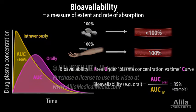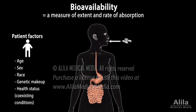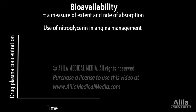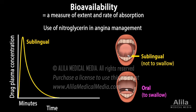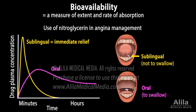Bioavailability of a defined drug form also depends on patient factors. For example, bioavailability of oral drugs is lower in people with digestive problems or previous gastrointestinal surgeries. The use of nitroglycerin in angina management is an example of how different routes of administration result in different bioavailabilities and therefore produce different therapeutic effects. Sublingual nitroglycerin diffuses immediately into the bloodstream, producing a fast, strong, but short-lived action and is typically used for immediate angina relief. On the other hand, oral nitroglycerin absorbs slowly, resulting in weaker but more sustained effects, and is usually prescribed for preventive purposes.